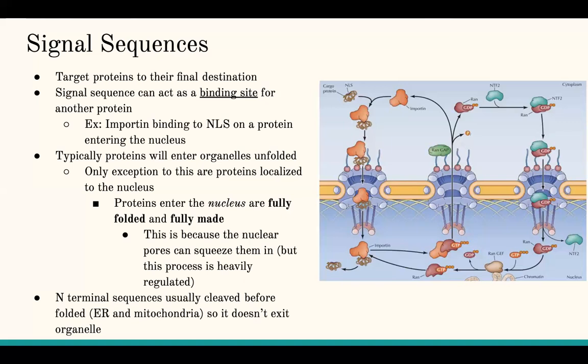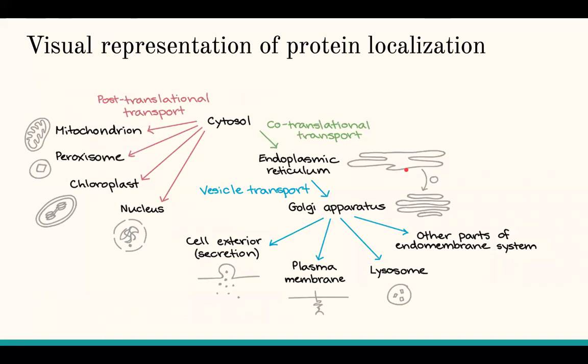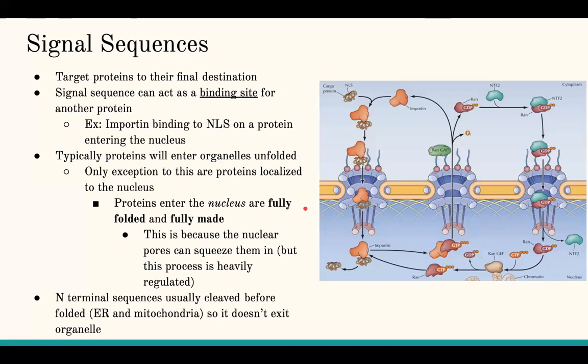In contrast, for ER and mitochondria, proteins enter unraveled like spaghetti and are then helped to refold within the organelle. Once a protein enters the ER or mitochondria, the N-terminal sequence in its primary structure gets cleaved so that the protein doesn't exit the organelle, because the N-terminus is where the signal sequence is found. Those amino acids get cleaved off once it enters the ER or mitochondria so it doesn't exit back out.